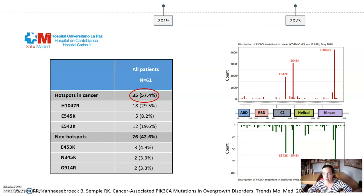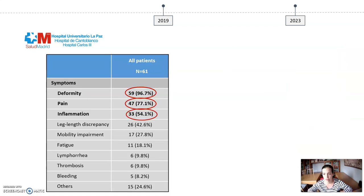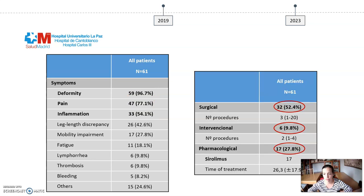Half of our patients present variants in hot spots found in cancer, similar to the literature. The most frequent symptoms in all groups were deformity, pain, and inflammation. 50% of our patients underwent at least one surgical procedure, while 10% required sclerotherapy. Before alpelisib, 27% received another pharmacological therapy — all of them sirolimus.